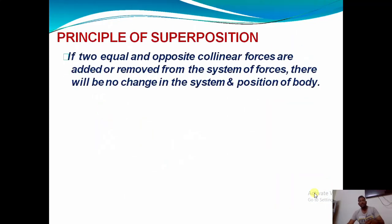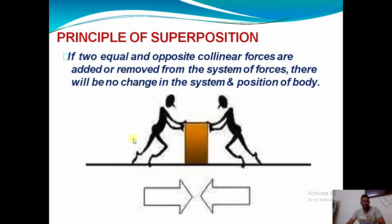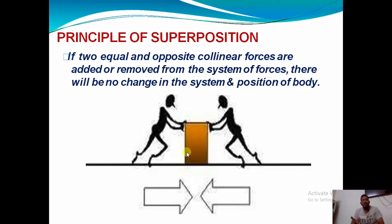Now one small definition: the principle of superposition. Observe the figure — one person is applying a force and another person is also applying a force of equal magnitude but in the opposite direction. Both persons are applying the same force magnitude but in opposite directions. After removing these two forces, the body is not disturbed — it doesn't change position.